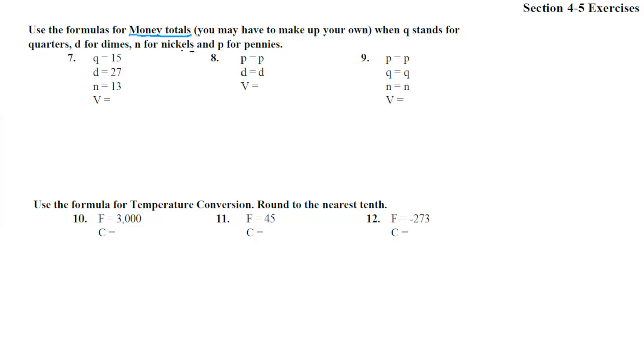Q is quarters, D is dimes, N is nickels, P is pennies. So here the formula, we're going to have quarters, dimes, and nickels. That's 25 cents for every quarter times the number of quarters, plus 10 cents times the number of dimes, plus 5 cents times the number of nickels. So we just made up our own formula. We didn't even need to get one out of the book.